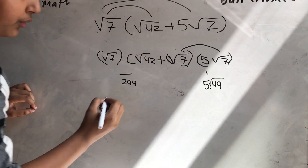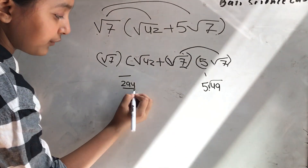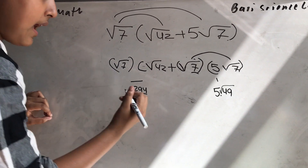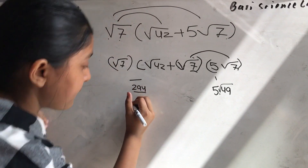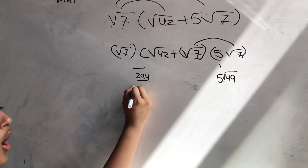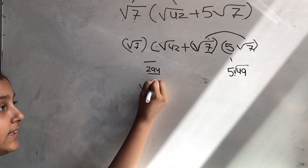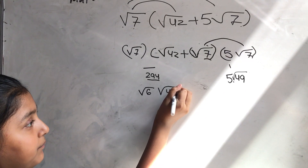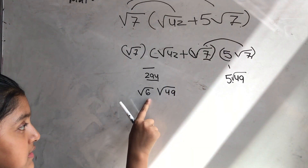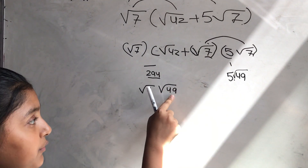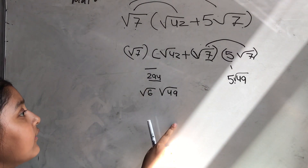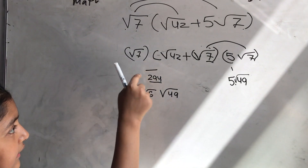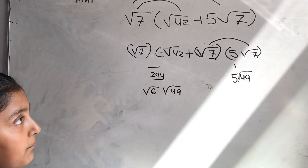Then you have to find the factors for 294. It is root 6 and root 49. Then you have to do 5 times root 49, because 6 times 49 equals 294.